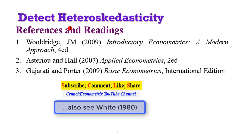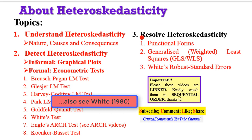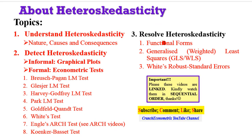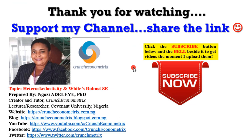For more reading and references regarding White's robust standard errors, I encourage you to pick any of these textbooks for further understanding. We have now covered heteroskedasticity — how it comes about, how you can detect it, and how you can correct it. Please share this video with your friends. Thank you for watching and staying with me throughout this tutorial series. Please subscribe to my channel — I am committed to teaching beginners and intermediate level users, and I'll be right back with more interesting videos.